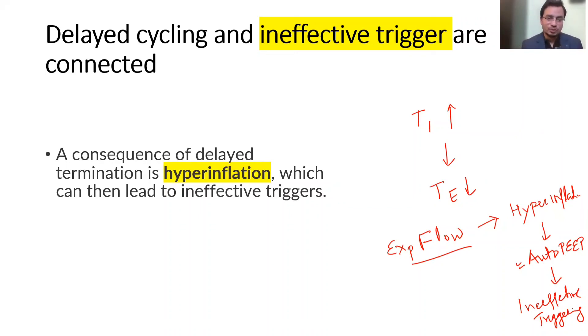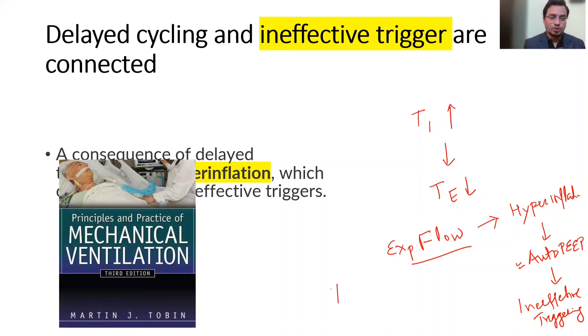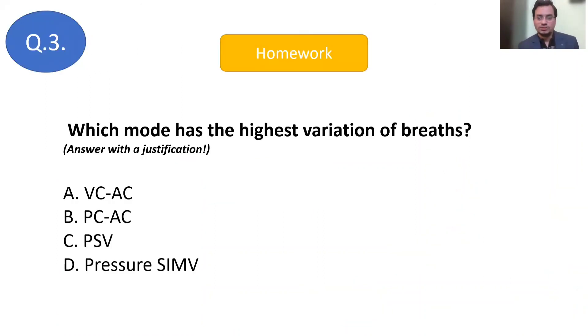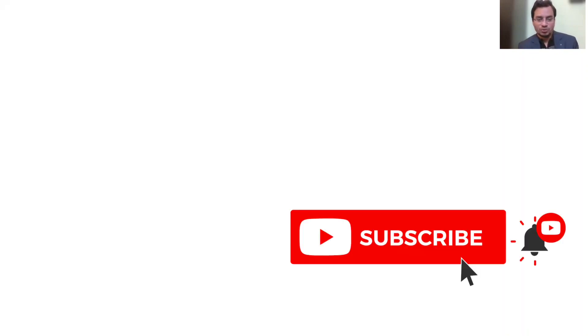These are very crucial concepts — go back and read about them. I would suggest reading from Tobin's book on mechanical ventilation. As homework: which mode has the highest variation in tidal volume — VC-AC, PC-AC, pressure support, or PRVC? Answer with justification in the comments. Thanks a lot. Bye-bye.